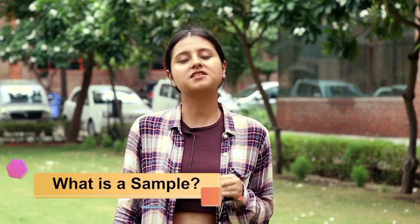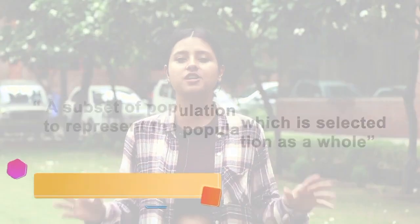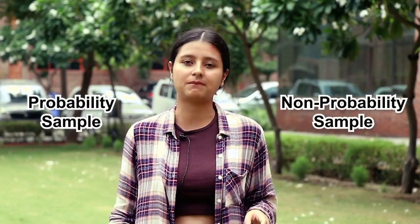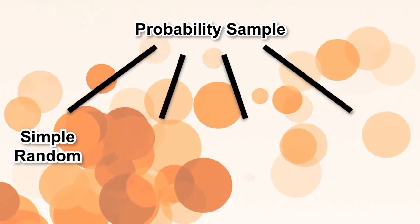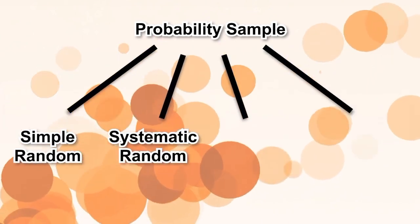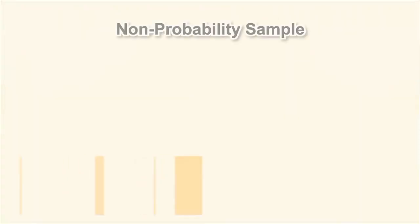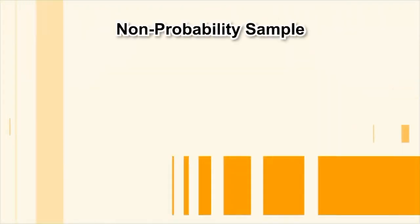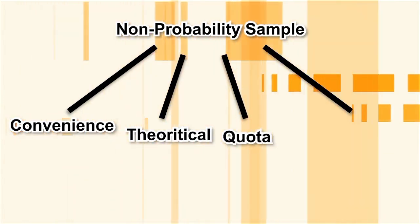A sample is basically a subset of a population, which is selected to represent the population as a whole. It is of two types: probability sample and non-probability sample. Probability sampling is of four types: simple random, systematic random, stratified, and multi-stage cluster. Non-probability sampling is of four types: convenience, theoretical, quota, and snowball.